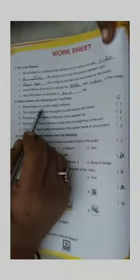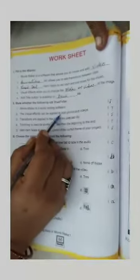Second bit, state whether the following are true or false. First one, Movie Maker is an audio editing software. False. Second one, the visual effects can be applied to both photos and videos. True. Third one, transitions are applied to the end of the slide clips. False.